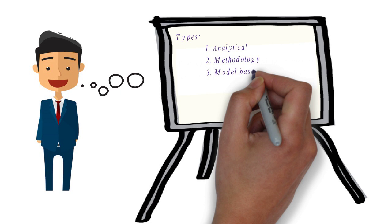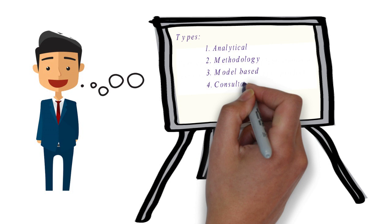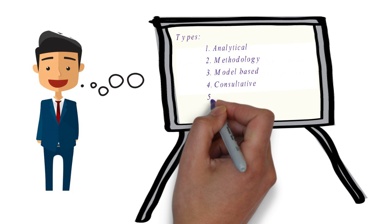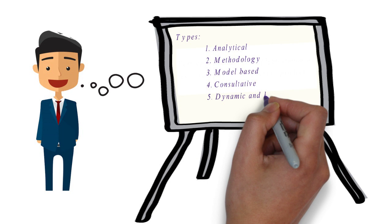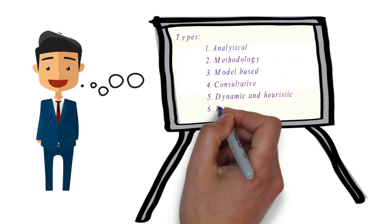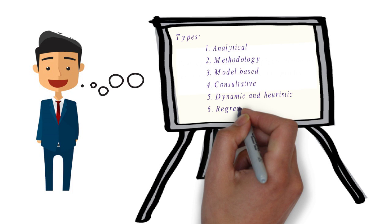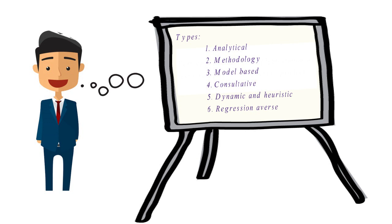Another approach is model-based approach, such as stochastic testing, where testing is based on statistical information such as failure rates. Testing is prioritized so that modules with higher failure rates are taken first. The next approach is consultative approach, where testing is based on the advice and guidance of technology or business domain experts outside the testing team. Another approach is dynamic and heuristic approach, such as exploratory testing, where testing is based on events rather than pre-planned. The next approach is regression-averse approach, where testing is based on existing test material or standard test suites that an organization maintains.